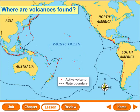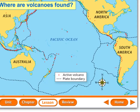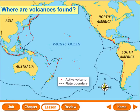Earth's crust is broken up into a number of moving plates, as we learned about in plate tectonics. For example, there's a circle of volcanoes around the Pacific Ocean, which you see here — it's called the Ring of Fire. The Ring of Fire follows the boundaries of the plates that meet around the Pacific Ocean. Volcanoes are more likely to erupt at these plate boundaries than anywhere else on earth.